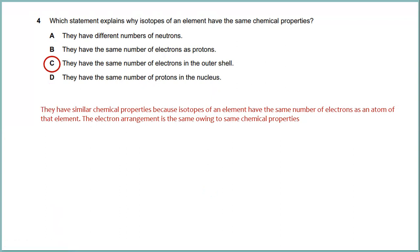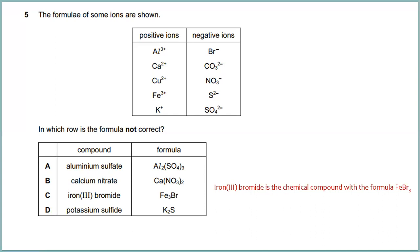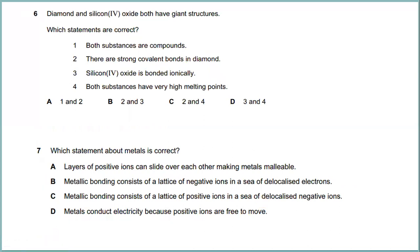Question five: the formulas of some ions are shown — positive ions and negative ions. Which row has the formula that is not correct? Iron(III) bromide is the chemical compound with the formula FeBr₃. The answer is C, because iron(III) bromide's correct formula is FeBr₃, not as stated in that row.